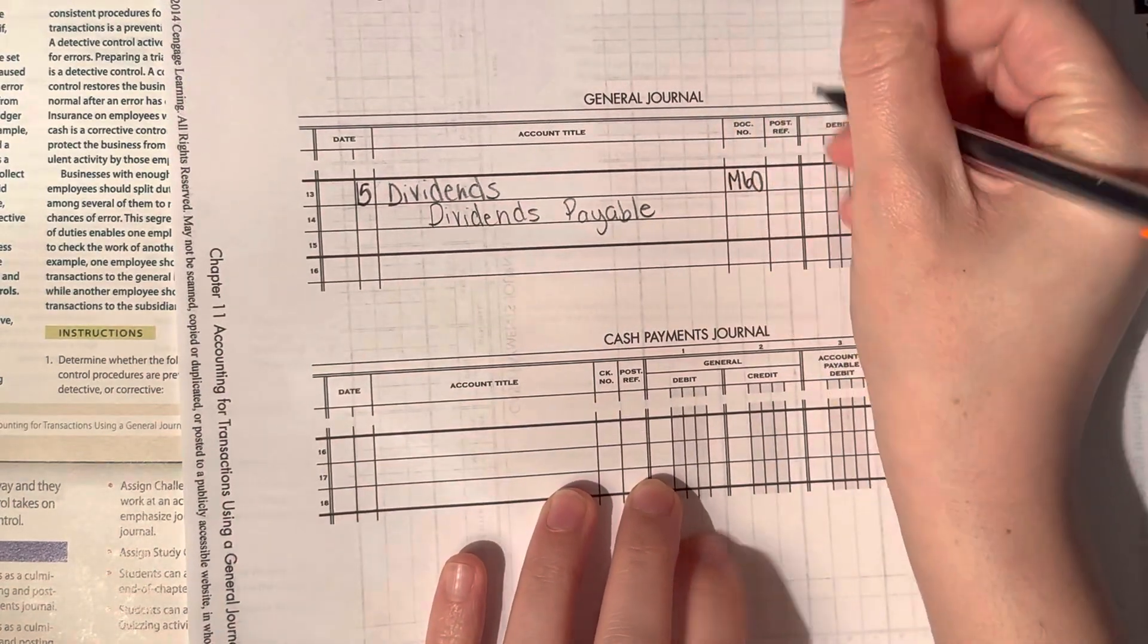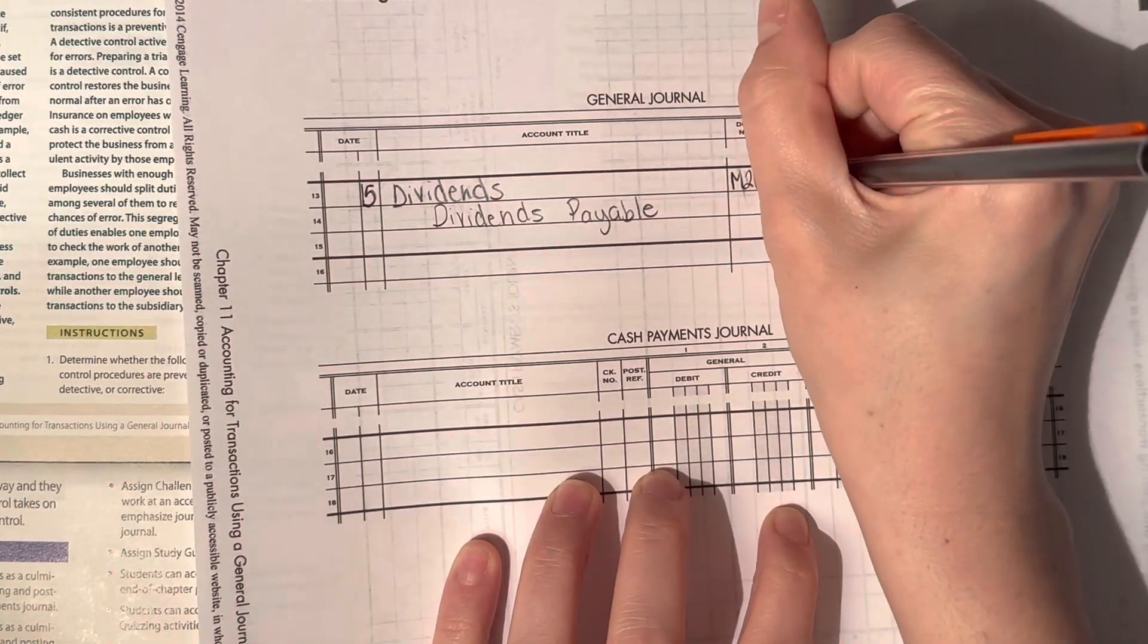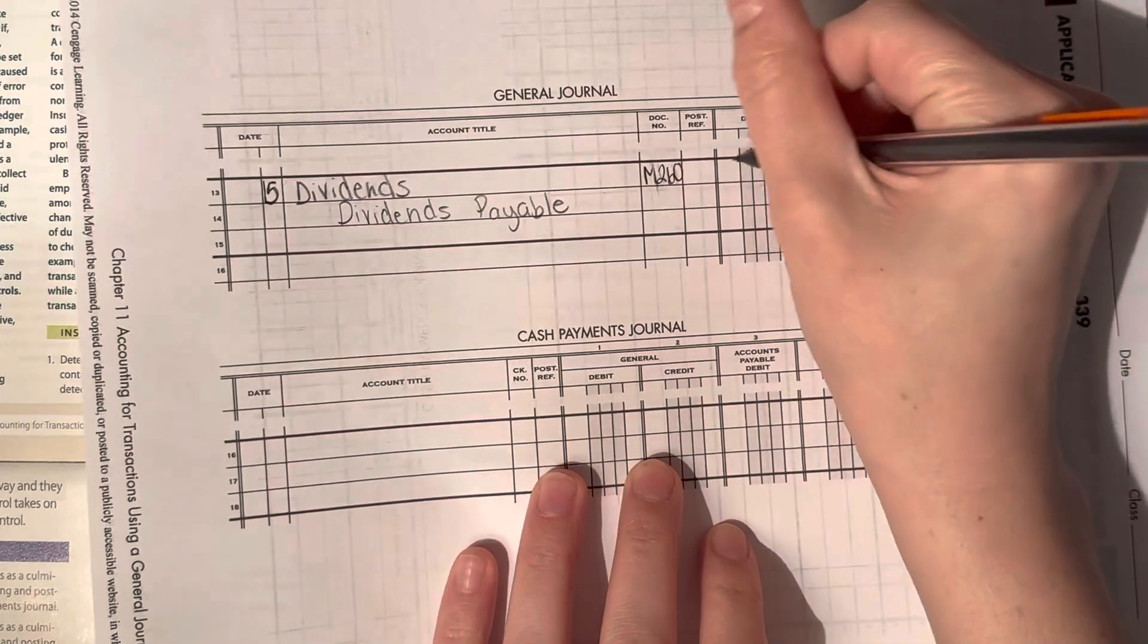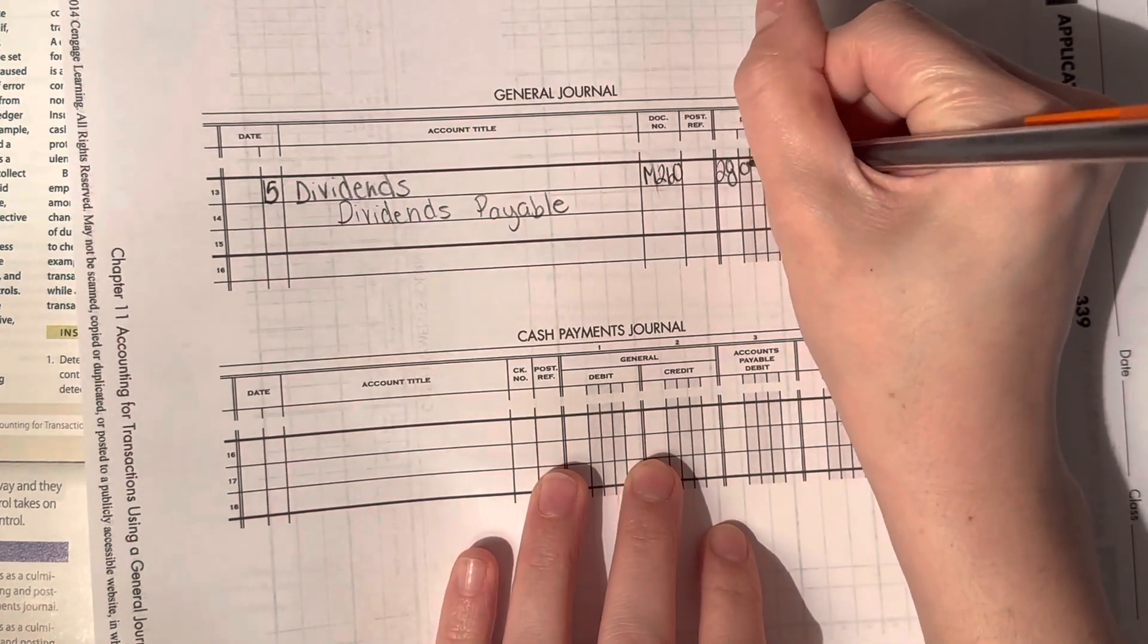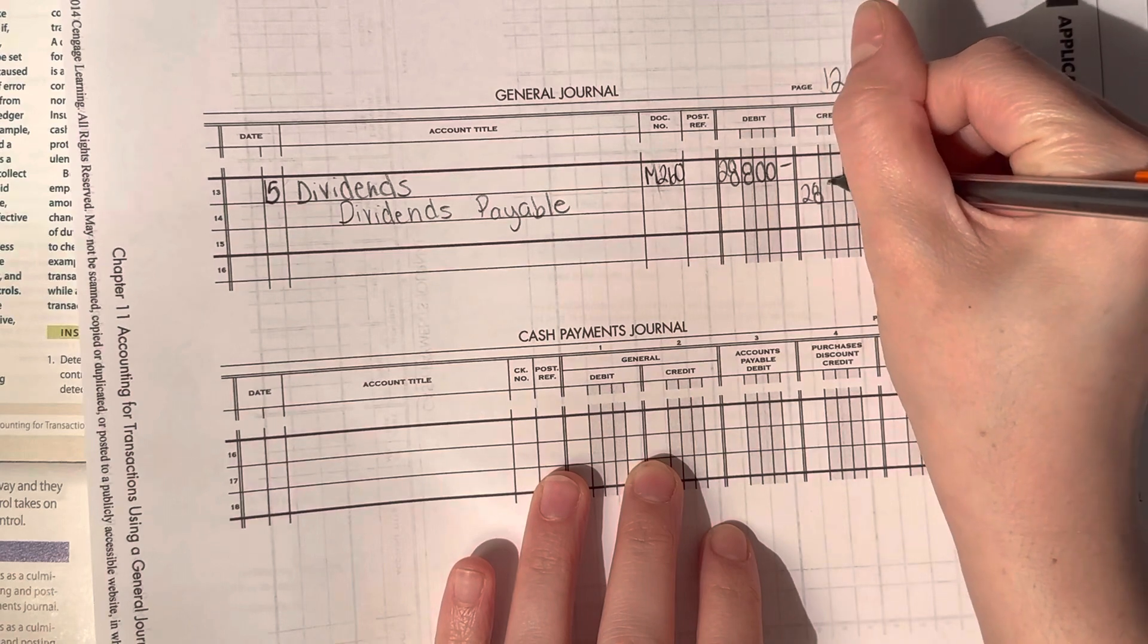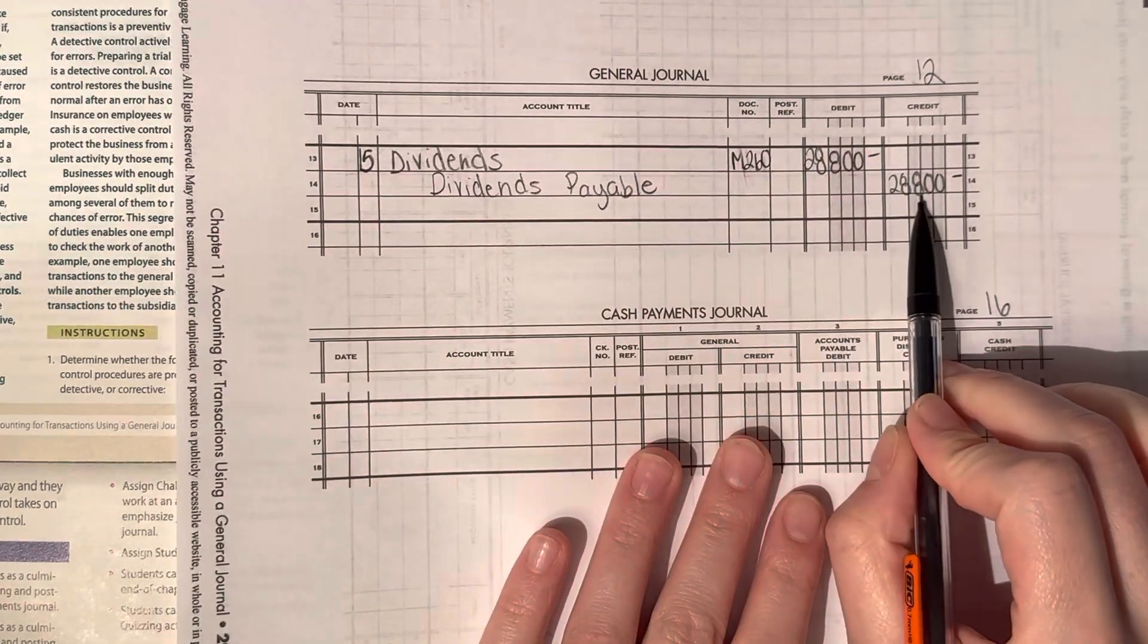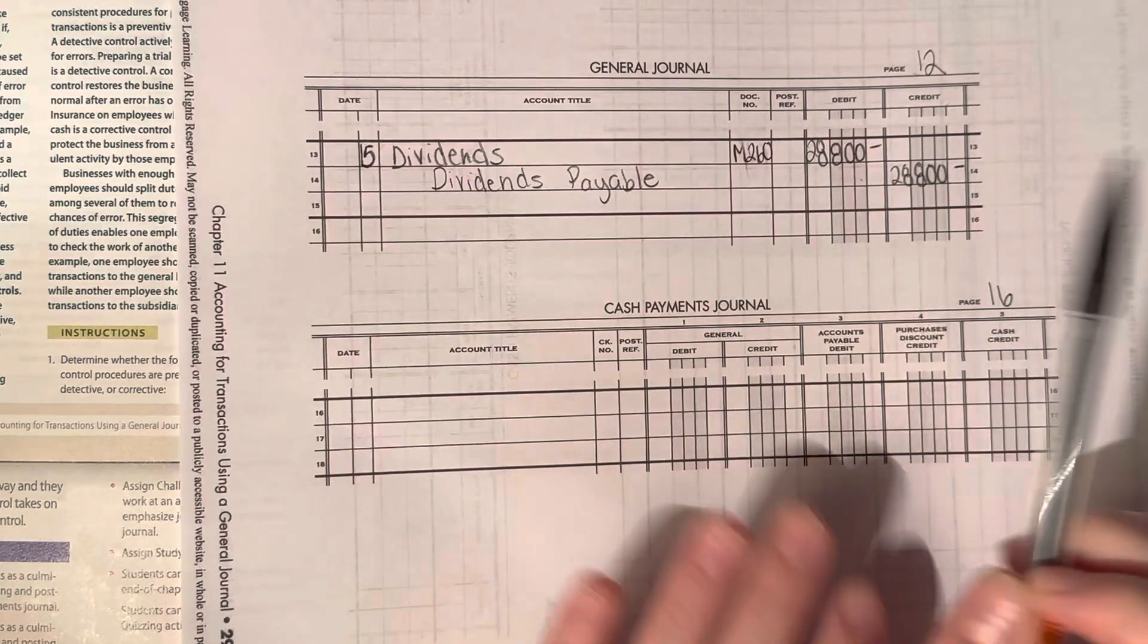M260 was the document number. And then $28,800 as the credit. Liabilities have a normal balance of a credit. Dividends have a normal balance of a debit.